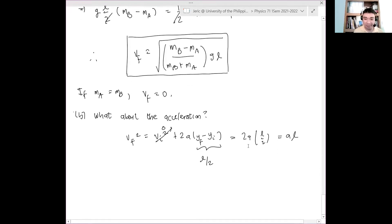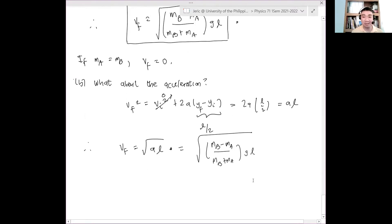Thus Vf equals square root of the acceleration times length. But this is also equal to this one. Hence this equals quantity MB minus MA all over MB plus MA quantity g times L. By comparing the two, what is my acceleration? My acceleration is simply g quantity MB minus MA all over MB plus MA.